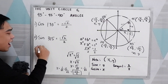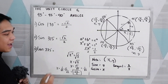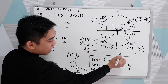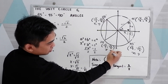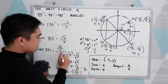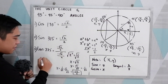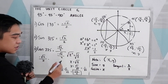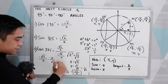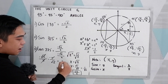Third, find tangent 225 degrees. Tangent is y over x. At 225 degrees, y over x gives us negative square root of 2 over 2 all over negative square root of 2 over 2. Multiplying by the reciprocal and canceling, negative times negative gives us positive 1.